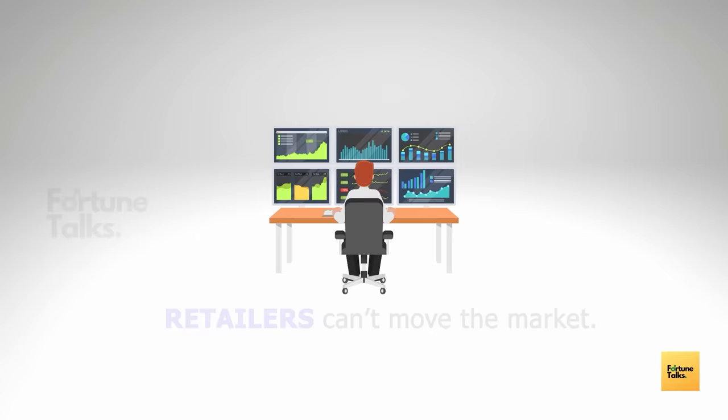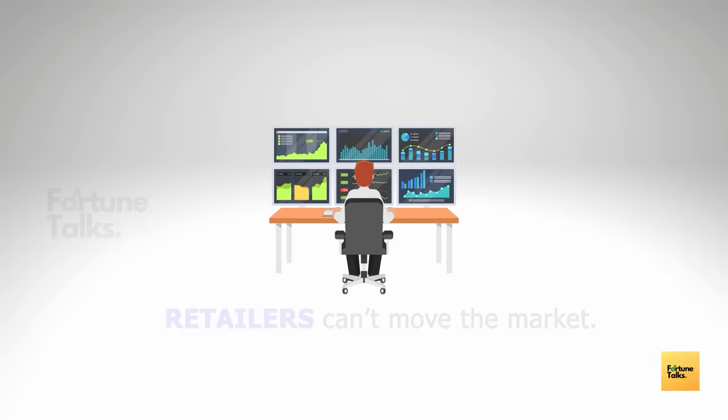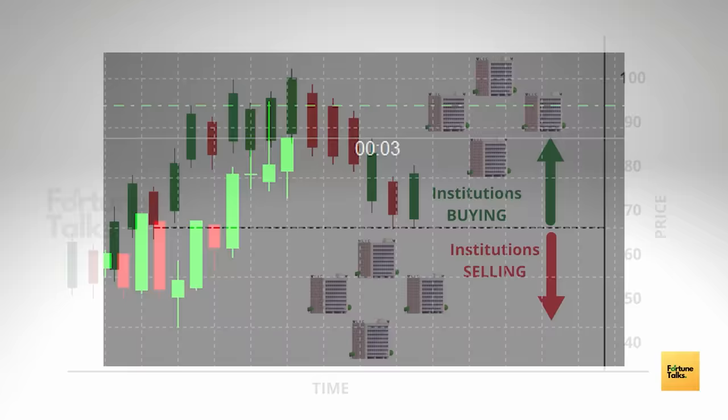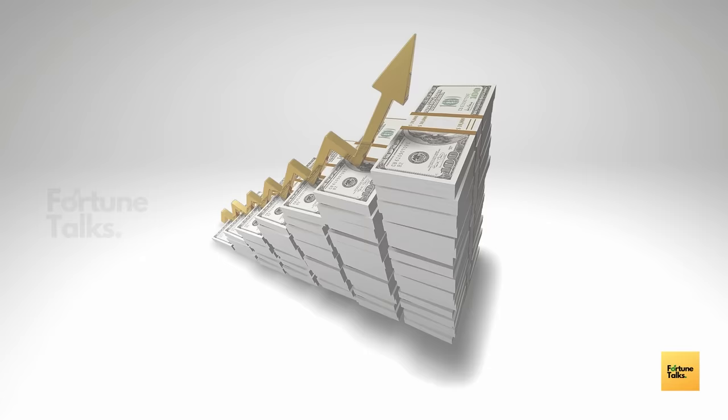Most individual traders or retailers have no ability to move the market. The market will only test a particular price if one or more institutions believe that it is financially sound to sell at that price, while other institutions believe it is profitable to buy there. At every tick in the stock market, institutions are buying and other institutions are selling, and all of them have proven systems that will make money by placing those trades.